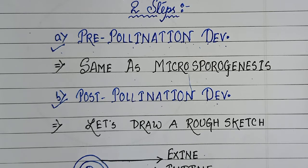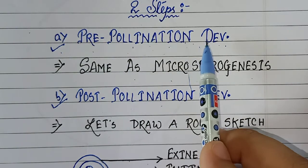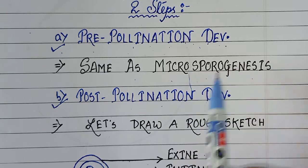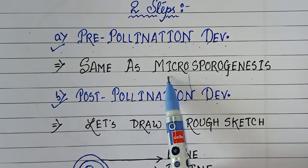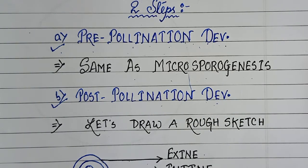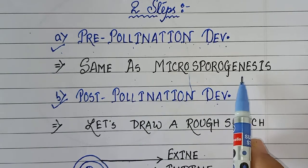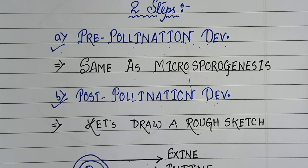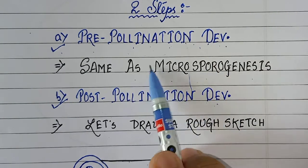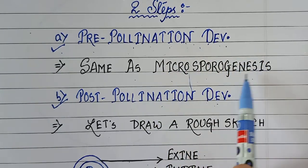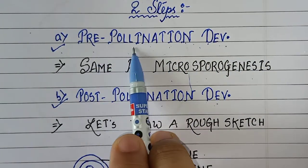Pre-pollination development is the same as micro sporogenesis. In my previous videos I have already discussed micro sporogenesis and its diagrammatic representation. You must go through those previous videos so your concept is clear. When you study micro sporogenesis, it will be crystal clear that this entire process is similar to that of pre-pollination development.